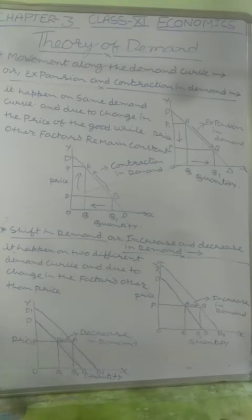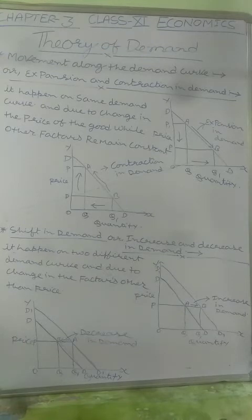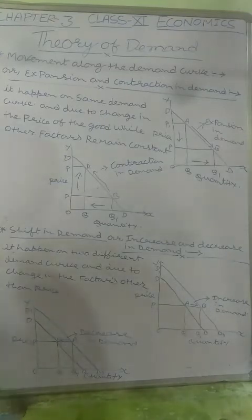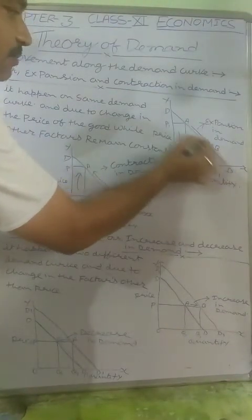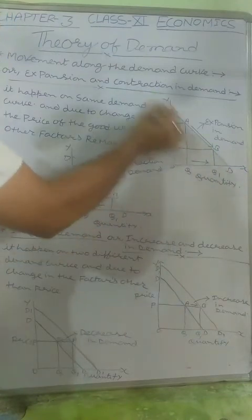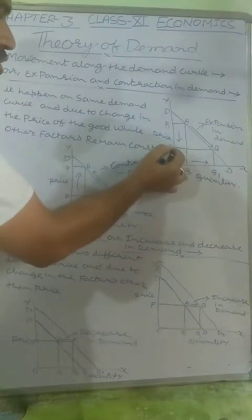Expansion is the case when price decreases and quantity increases. In this case, consumers travel downward on the demand curve from point A to point B. The price decreases from P1 to P0, and accordingly the quantity demanded increases as the consumer moves down the demand curve from A to B.